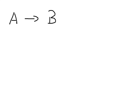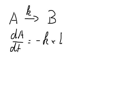Let's assume we have a reaction where compound A is converted into a product B, and this has a certain rate constant. We can write for the consumption of A the rate equation: dA/dt equals minus k times A. If it is a first-order reaction, we write A to the power of one — that's a first-order reaction.